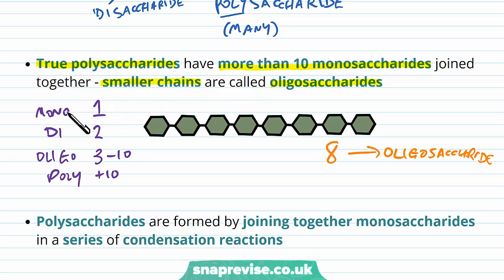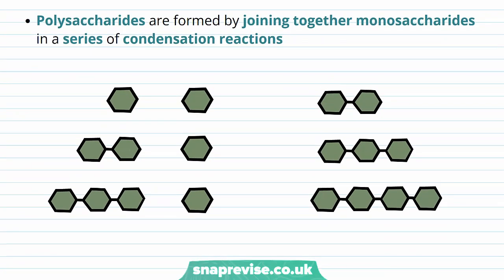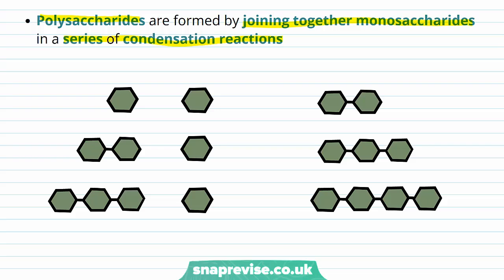You can see these prefixes in lots of types of biological molecule as well, like proteins and nucleic acids. But in the case of carbohydrates, we're talking about saccharides. In order to create polysaccharides, we form them by joining together monosaccharides in a series of condensation reactions. Condensation reactions are what join monomers together to form polymers, so each time a monosaccharide is added to another monosaccharide or a growing chain, there's going to be a condensation reaction.